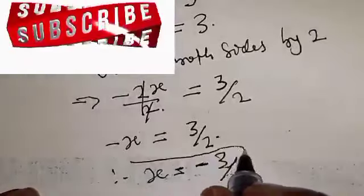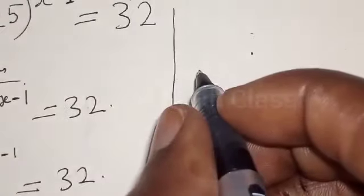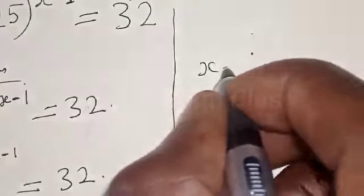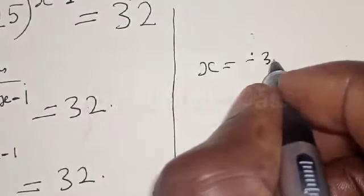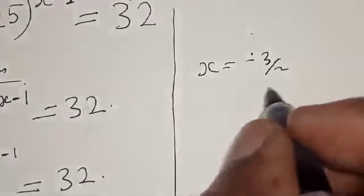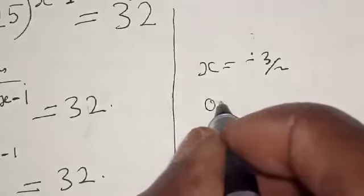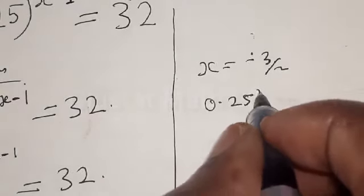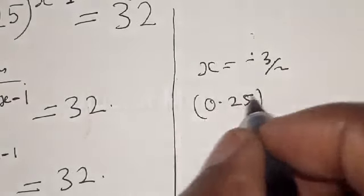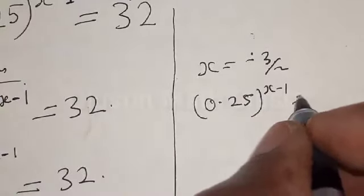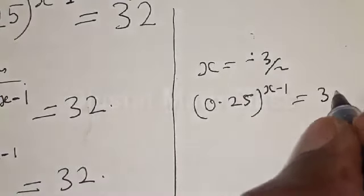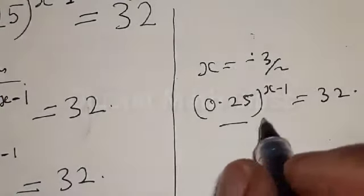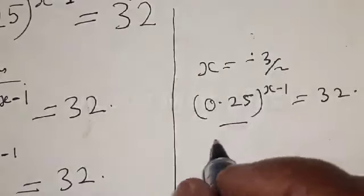Therefore our final answer is s equals minus 3 over 2. We may also check to confirm our answer. The question is 0.25 raised to the power s minus 1 equal to 32, and we want to verify this holds at s equals minus 3 over 2.